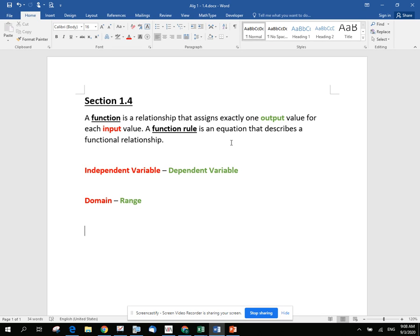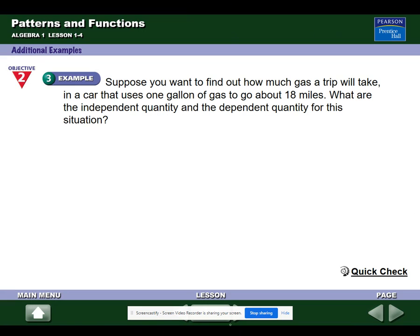So again, domain and range, they're sets of numbers, usually more than one, sometimes infinitely many. Domain goes with the X, goes with the independent variable. That's the input. Range is the output, the dependent variable. Oftentimes, the variable is Y when we're using X and Y.